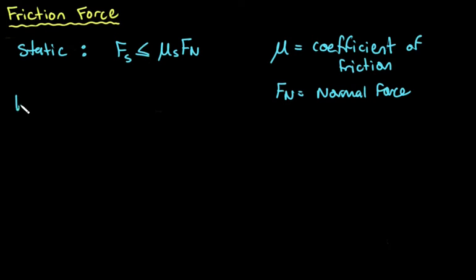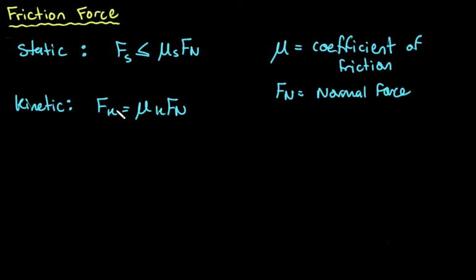For kinetic friction, we have the formula Fk = μk × Fn. Kinetic friction is equal to the coefficient of kinetic friction times the normal force. The formulas are very similar, just with slight differences in the coefficients.